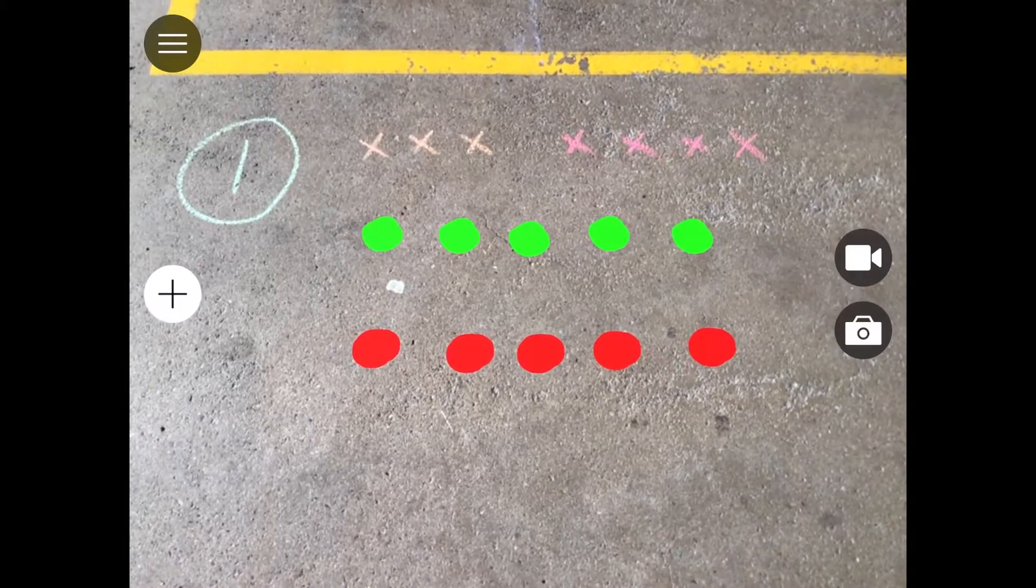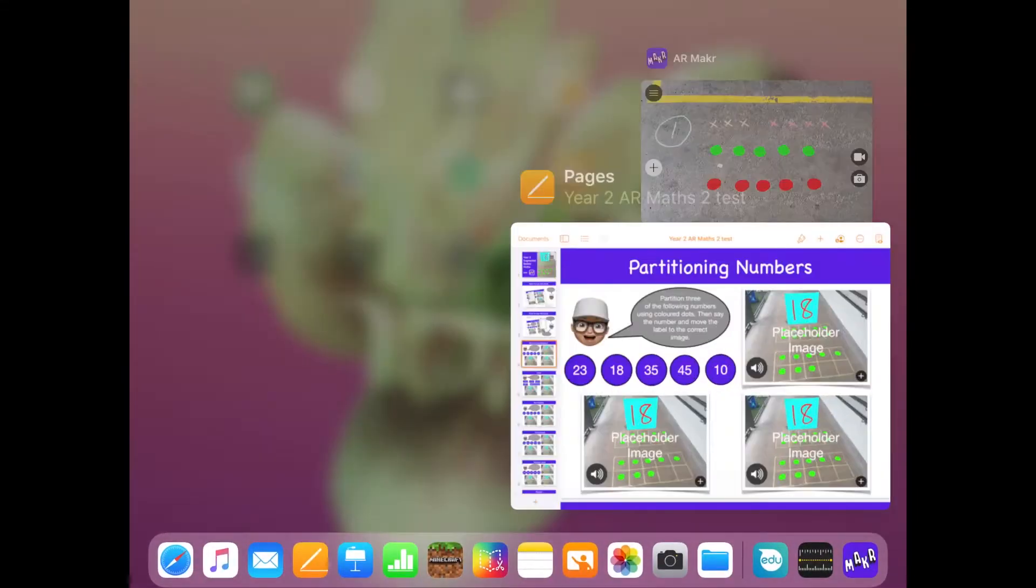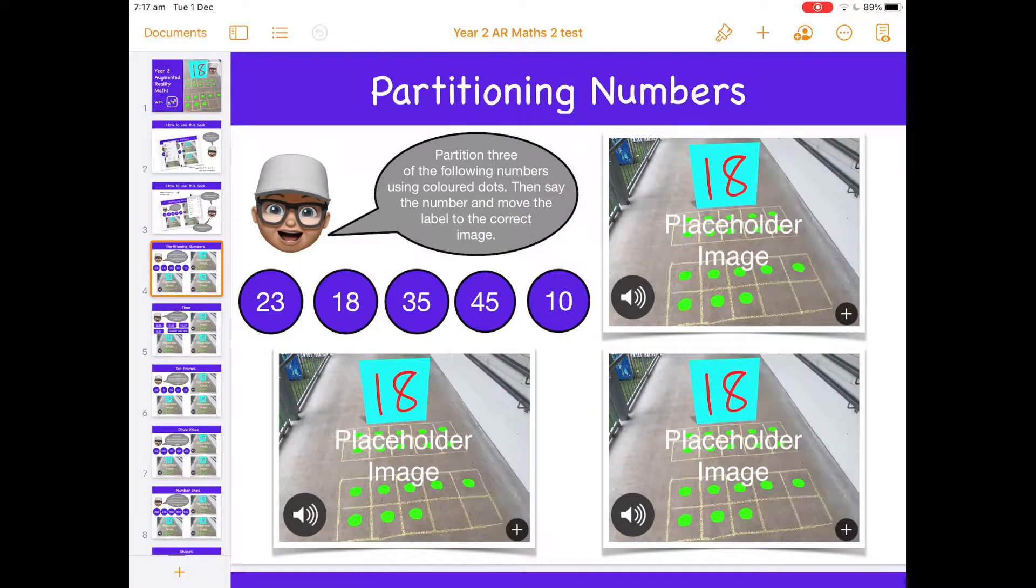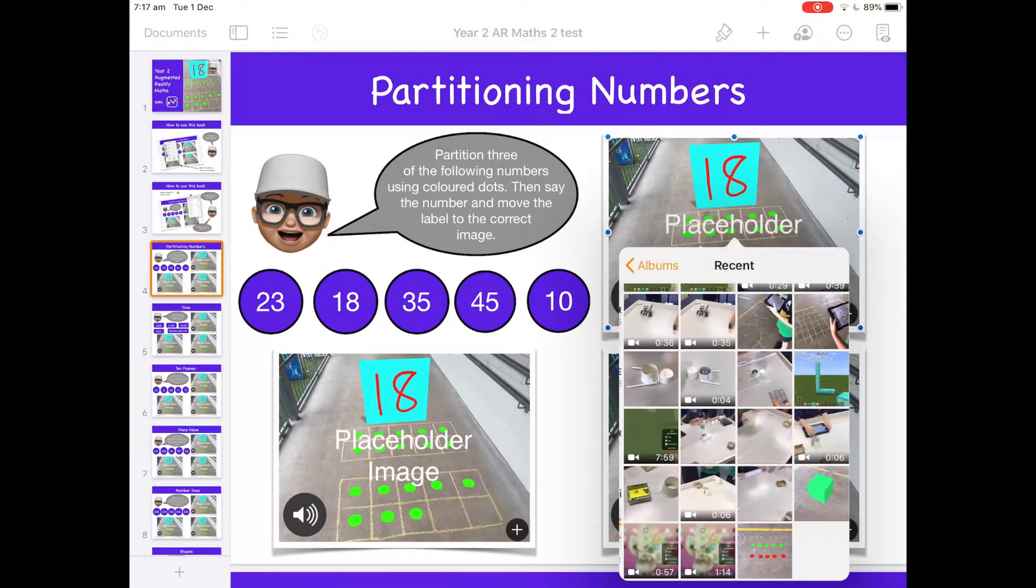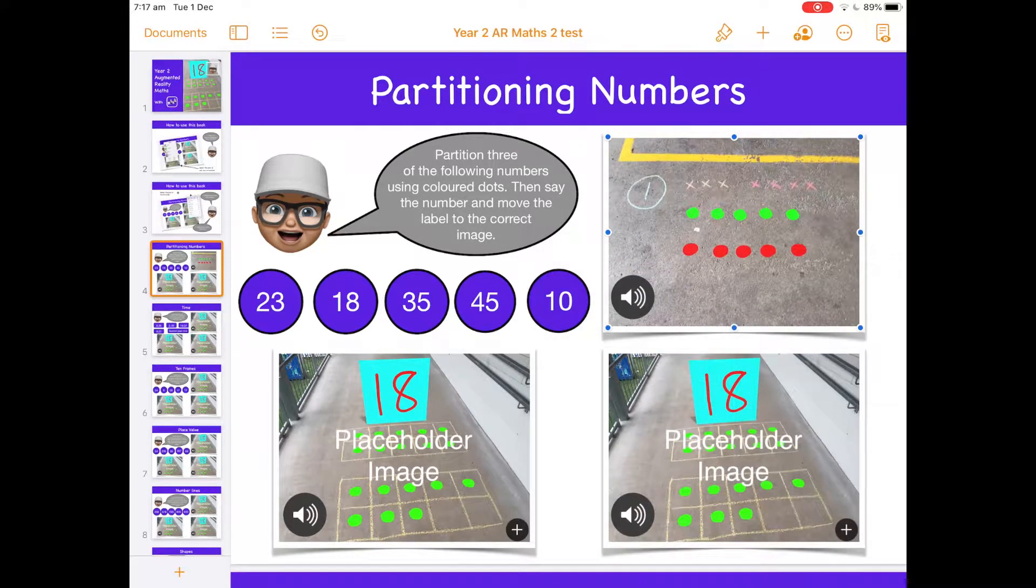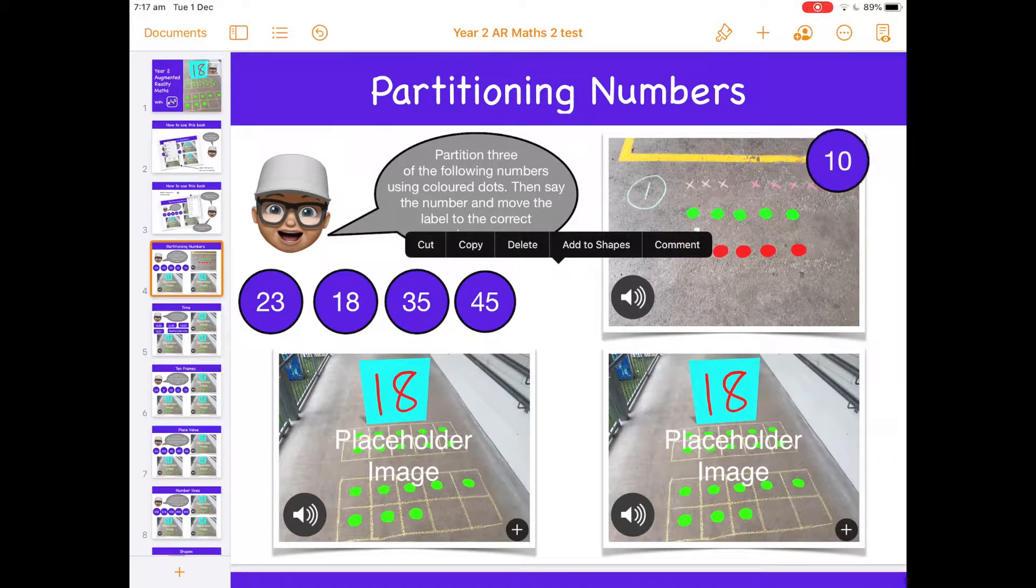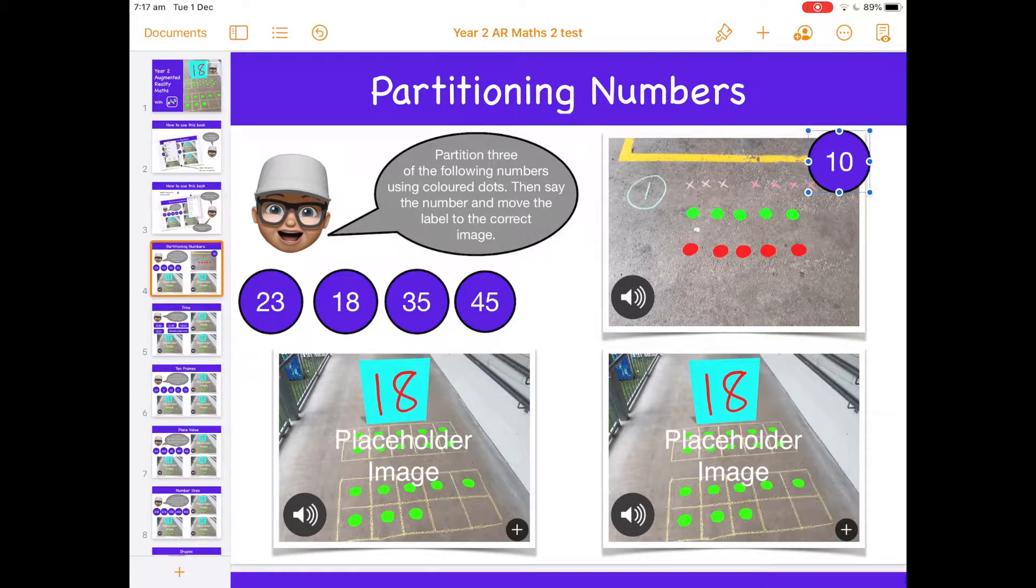Now I've taken my photo. Now I can double push and go back to my actual Pages template, and I'll put a link below for this template. I can now go and push the plus in the bottom right hand corner of one of the placeholders, go to recent, select the image, and there we've got partitioning. I can select that one and put that there.